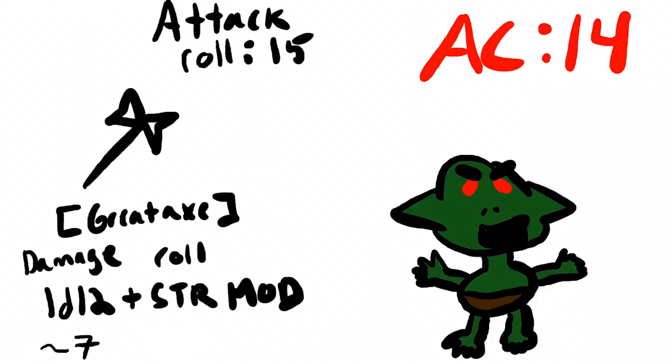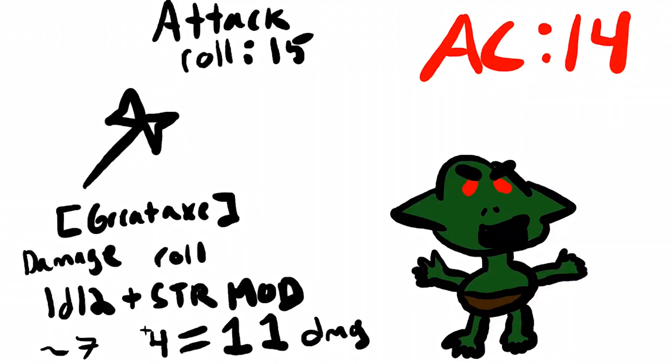Damage roll. If a hit is confirmed with the attack roll, you then roll for damage. Damage will depend on what weapon or spell you are using, and every weapon or spell that does damage has the dice amount listed on it. You add the relevant modifier to the roll depending on the weapon or spell used. For instance, if you hit a goblin with a greataxe, you will likely roll 1d12 plus your strength modifier.